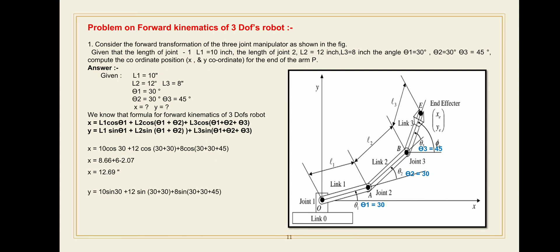Now find the Y coordinate by putting all given values into the Y component equation. Y is equal to L1 sin(theta 1) plus L2 sin(theta 1 plus theta 2) plus L3 sin(theta 1 plus theta 2 plus theta 3). Substituting: theta 1 = 30, theta 2 = 30, theta 3 = 45 — so 10 sin(30) plus 12 sin(30 plus 30) plus 8 sin(30 plus 30 plus 45). Solve this equation.